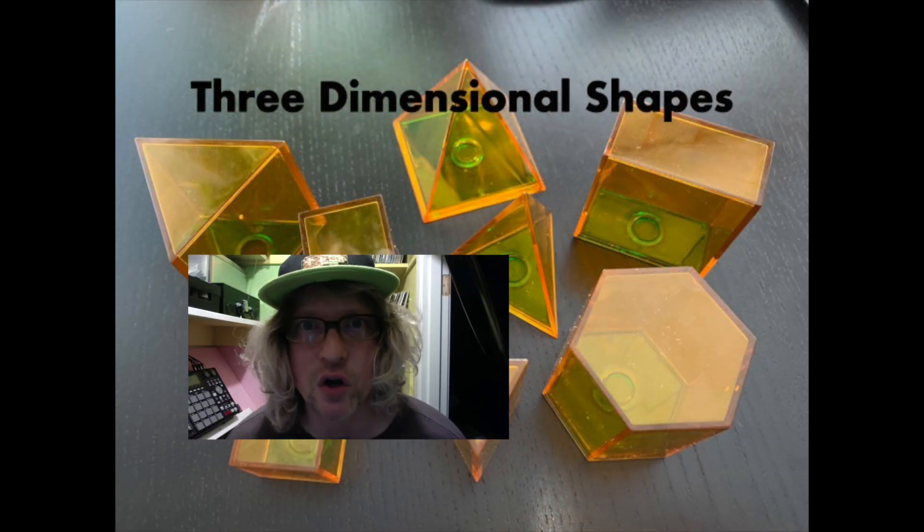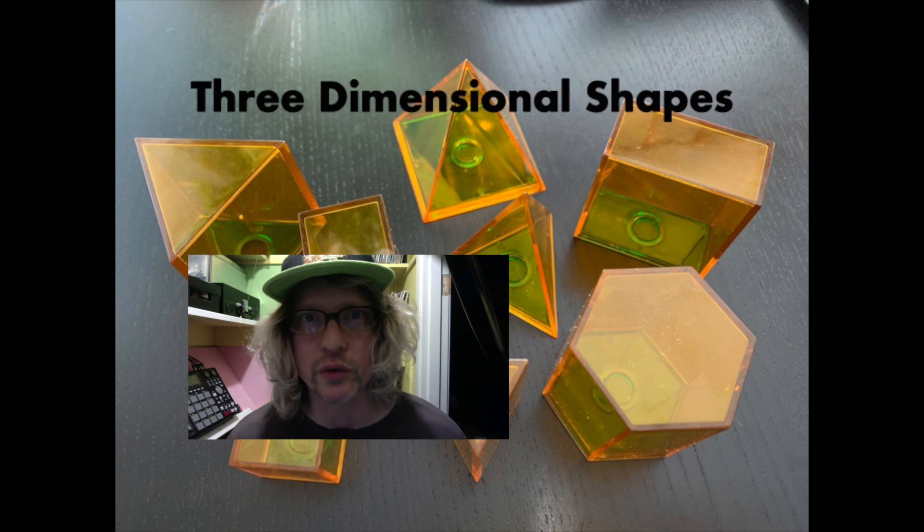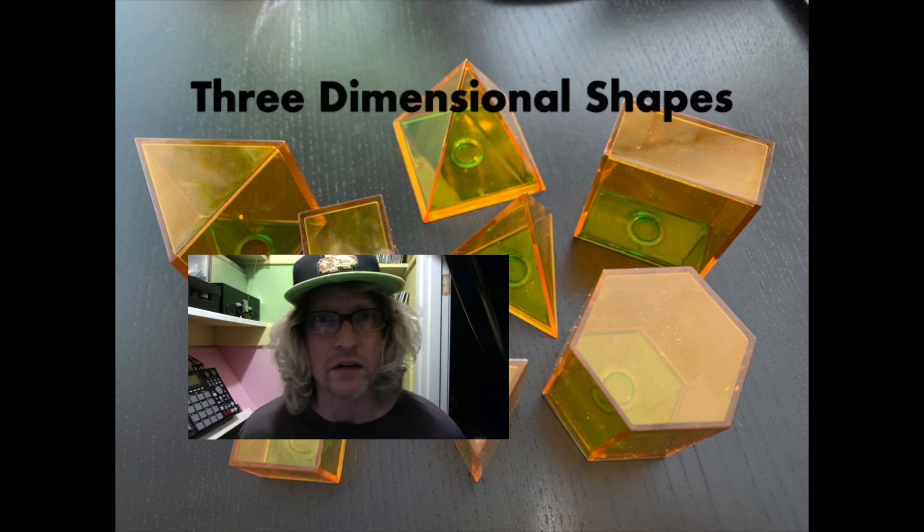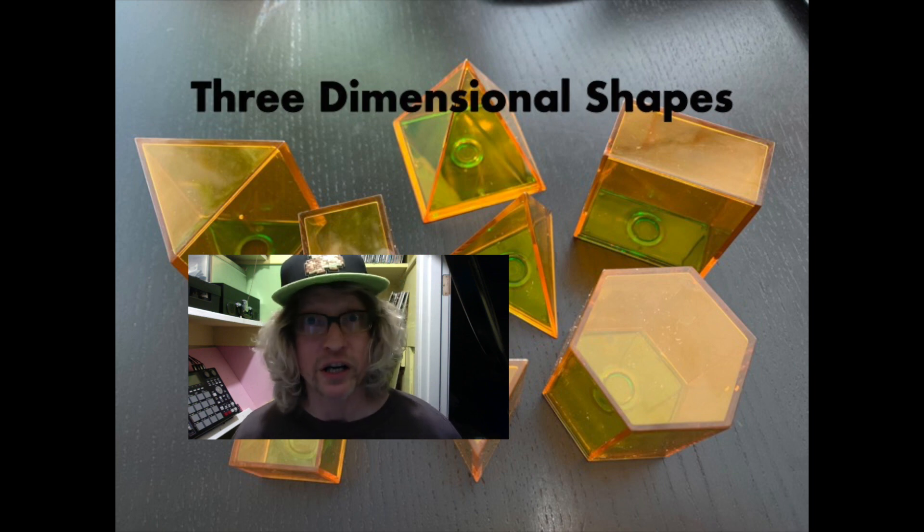This is Mr. Robison and this is our first video in our unit on three-dimensional geometry. What we're going to learn how to do in this unit is find the surface area and the volume of a number of different types of three-dimensional objects. Before we do that, we need to know some words, so we need to learn some vocabulary.